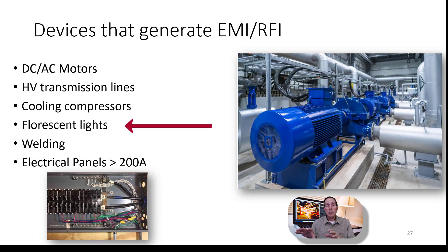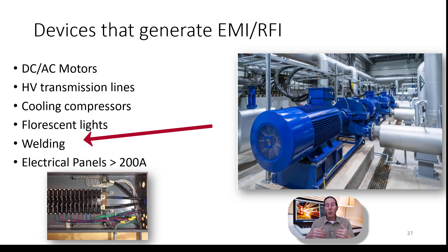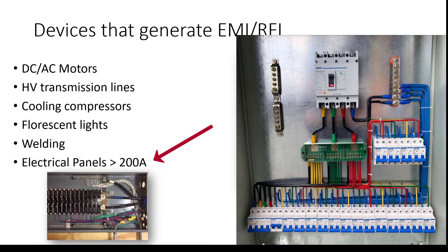Cooling compressors, fluorescent lights, and welding — if you've got anybody welding in an area with tremendous high current, you're going to get EMI. Electrical panels above 200 amps — which is typically what your home has — mean that any commercial installation of three-phase power is also a potential EMI/RFI generator.